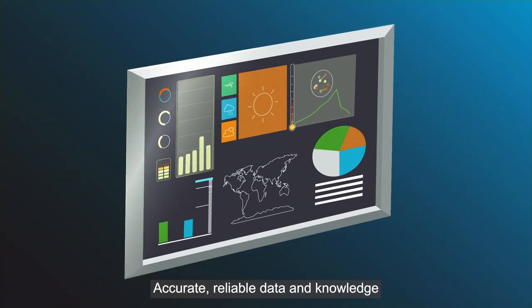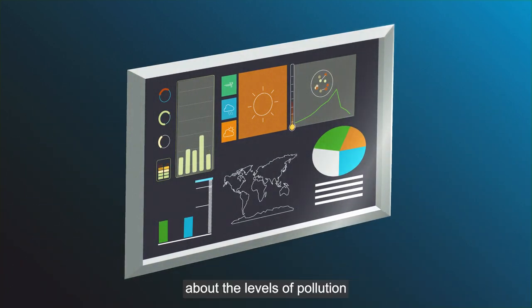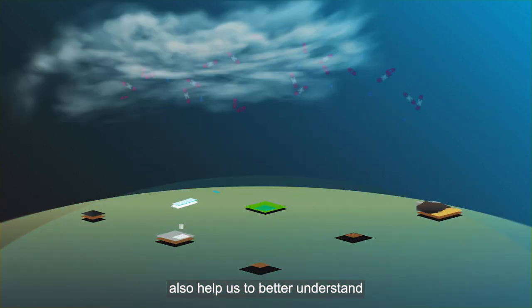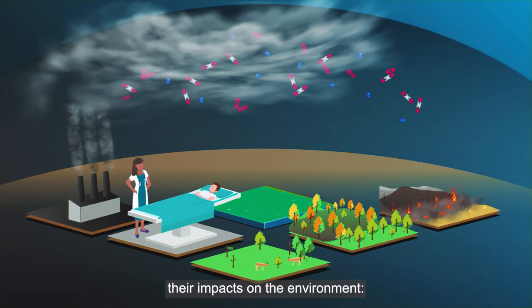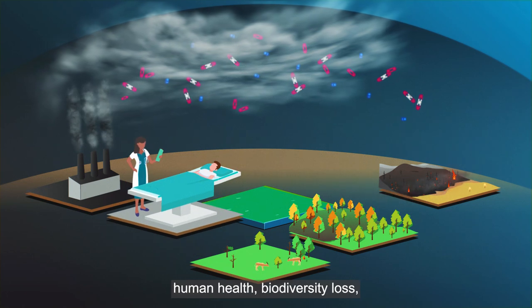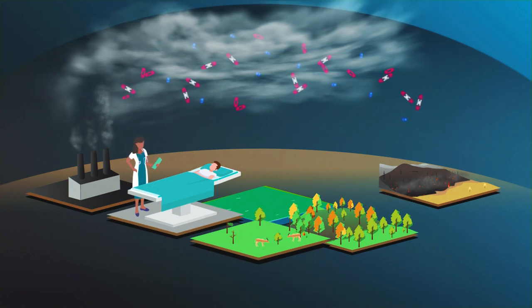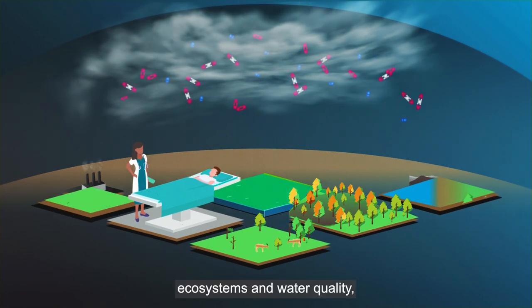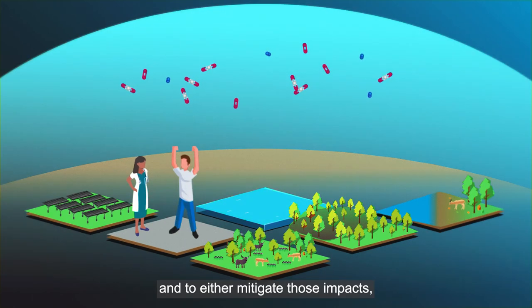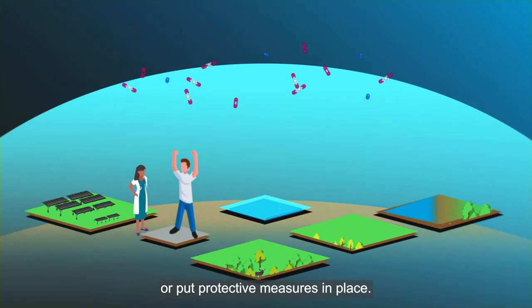Accurate, reliable data and knowledge about the levels of pollution and atmospheric deposition also help us to better understand their impacts on the environment, human health, biodiversity loss, ecosystems and water quality and to either mitigate those impacts or put protective measures in place.